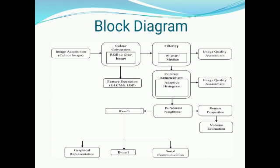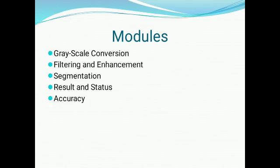After filtration, a contrast enhancement process is done where the contrast of the image is adjusted to get a more accurate result. Using a K-nearest neighbor algorithm, the cancer region is marked and the result is sent directly to the doctor's email. The steps followed in our system are: grayscale conversion, filtering and enhancement, segmentation, and resultant status.